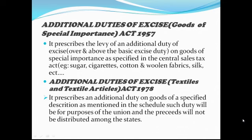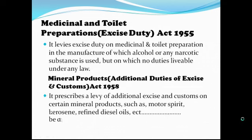Examples include Sugar, Cigarettes, Cotton, Woolen Fabrics, Silk, Special Woven Fabrics, etc. This additional duty is charged in lieu of sales tax and is passed on to the states. The next act is the Additional Duties of Excise (Textiles and Textile Articles) Act, 1978. It prescribes an additional duty on goods of specified description as mentioned in the schedule; such duty will be for purposes of the Union and proceeds will not be distributed among the states. The next act is the Medicinal and Toilet Preparations Excise Duty Act, 1955. It levies excise duty on medicinal and toilet preparations in the manufacture of which alcohol or any narcotic substance is used but on which no duty is leviable under any other act. The excise duty in this case, though levied and collected by the Central Government, is distributed among the states.